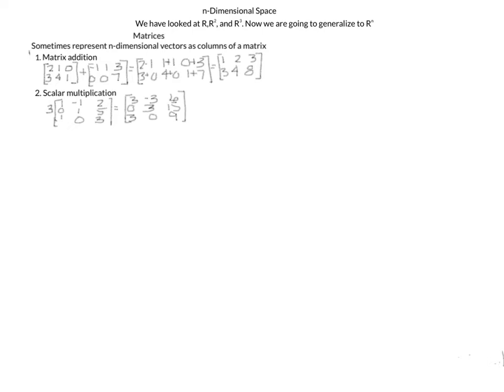In Rn, it's very common to represent many vectors as columns of a matrix. So here I might have a matrix with vector (2, 3), vector (1, 4), and vector (0, 1), and I'll represent each vector as a column. For now you'll have to take my word for it — later it'll become more apparent why this is convenient, especially if you've taken vector calc.